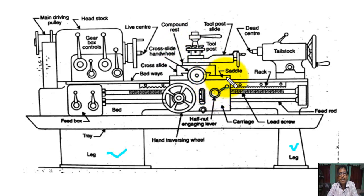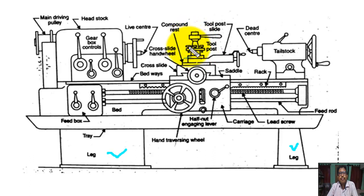This is the saddle. On the saddle, this is called the cross slide. On the cross slide, this is called the compound rest, and this is called the tool post. This is the lever for the tool post slide.